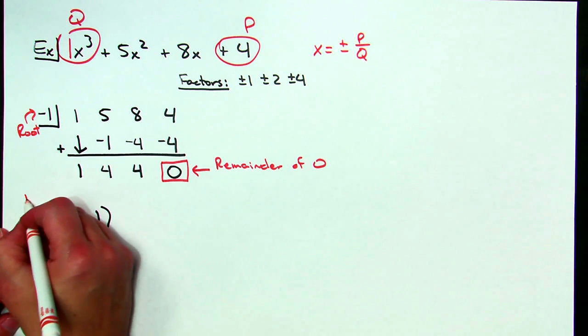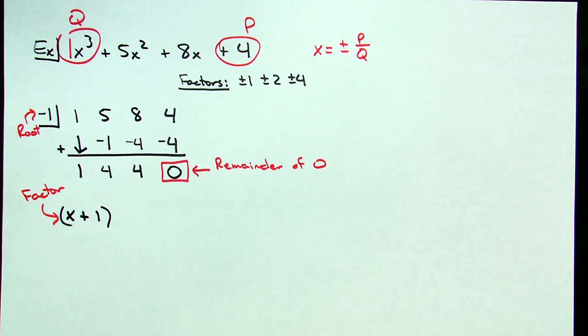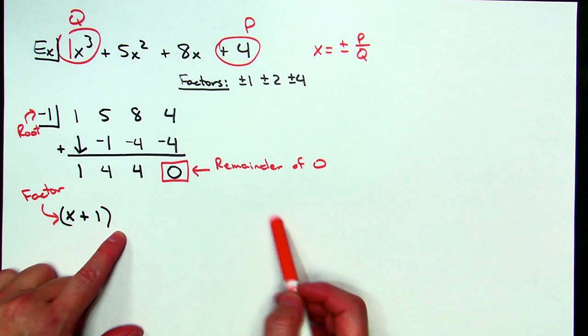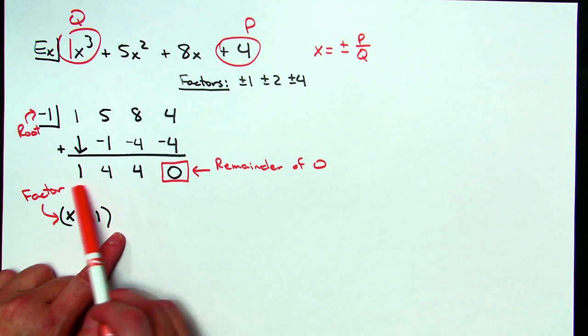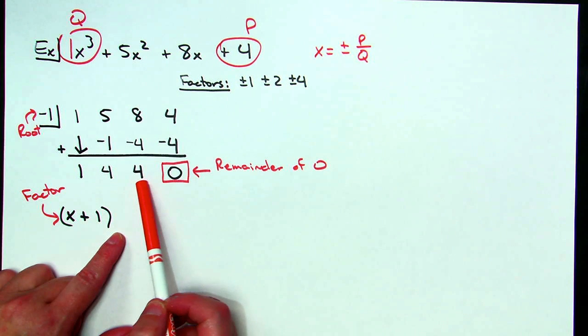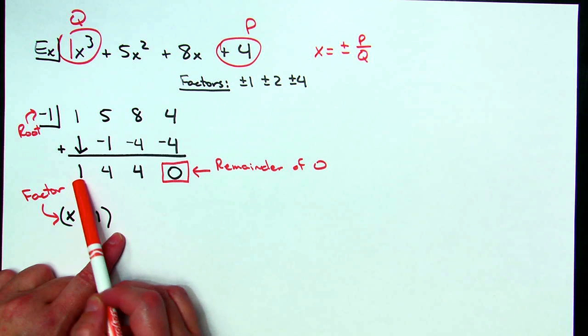And from that I can come up with the factor of x plus one. Now I have to come up with the rest of the expression and I'm going to get that from my synthetic division. If you recall this is your plain constant term, this will be an x term, this will be an x squared and then an x third so forth so on down the line.